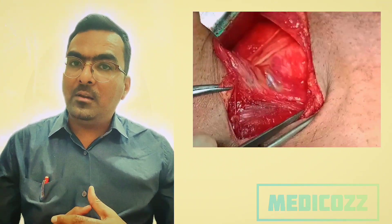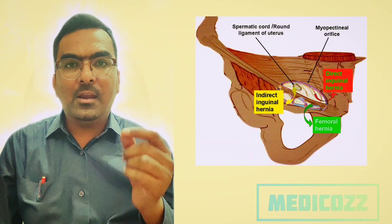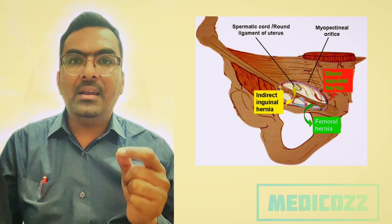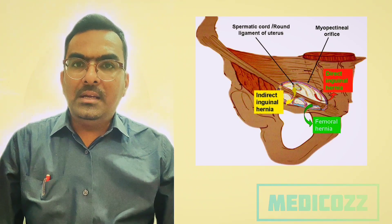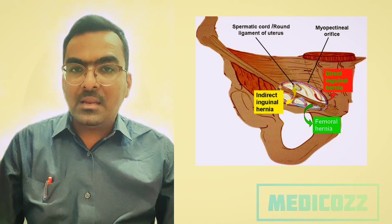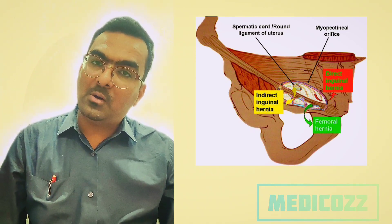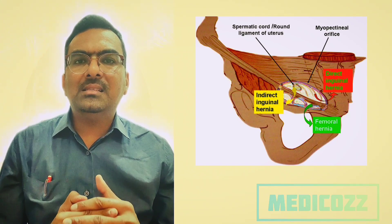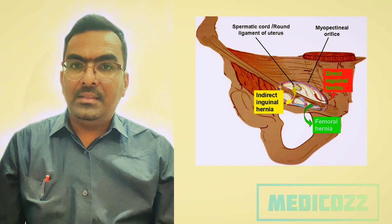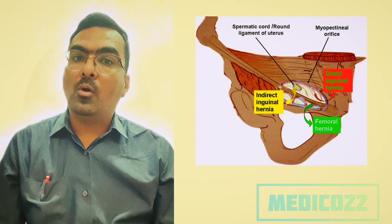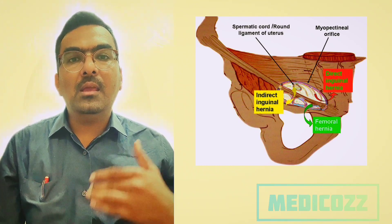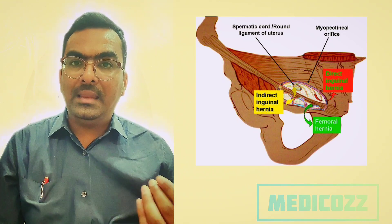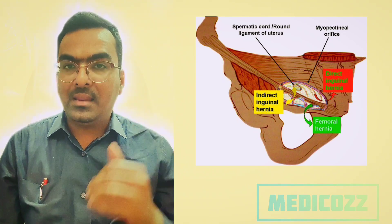In conclusion, Froucard's myopectinial orifice represents a key anatomical region in the study and treatment of groin hernias. Its structure and boundaries have a direct impact on surgical technique and patient outcomes. By reinforcing the entire MPO, a surgeon can significantly reduce the risk of hernia recurrence. This approach has become a standard in modern hernia repair, offering improved outcomes for patients and enhancing the overall success of hernia surgery.